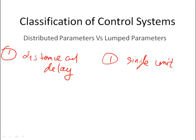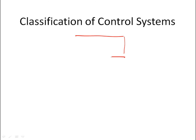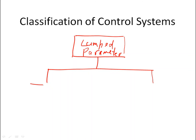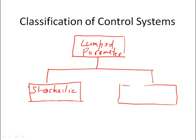We will go for lumped parameter systems in our course and will not cover distributed parameter systems. Once we decide on a lumped parameter system, it can be divided into two parts: stochastic and deterministic. A stochastic system is one where we observe the output but do not have a clear understanding of the various causes and inputs — it is also called probabilistic.